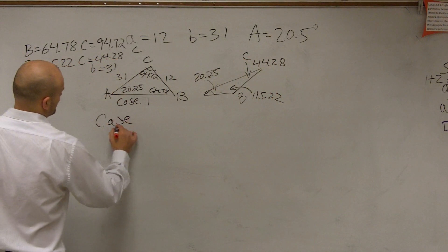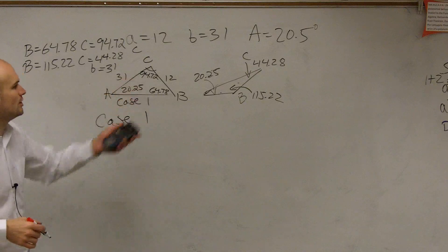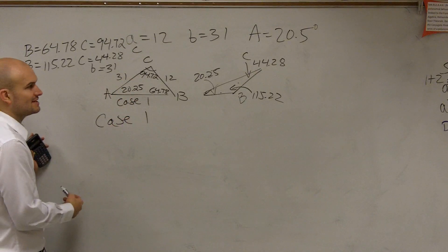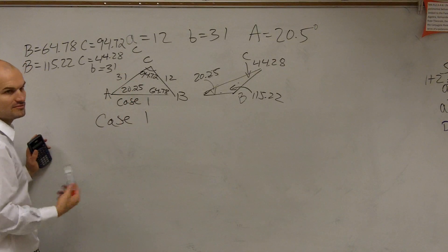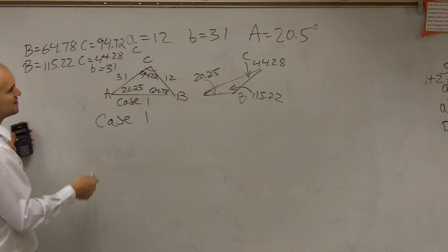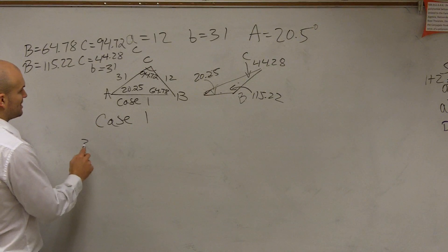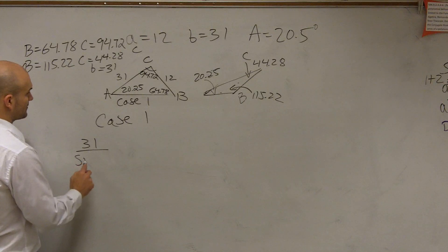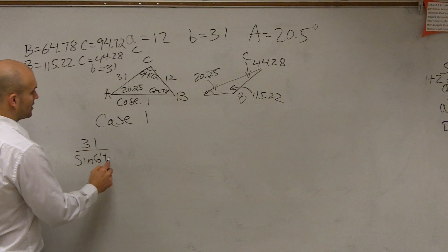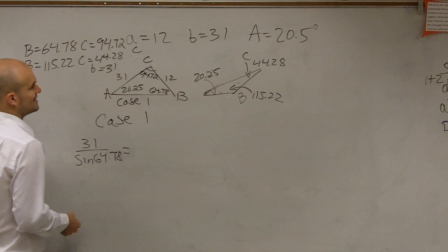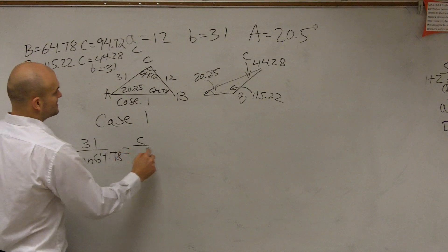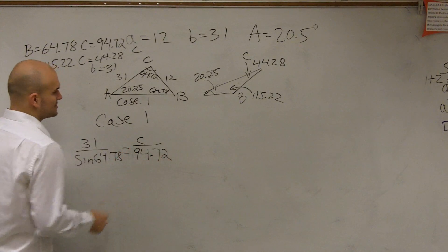So let's do case one. So in case one, we know all the angles. The only thing we don't know is what c is. So we just need to pick a ratio, a's with c's or b's with c's. Doesn't really matter, let's just do this one, let's do b. So I say 31 over the sine of 64.78 is equal to c over the sine of 94.72.